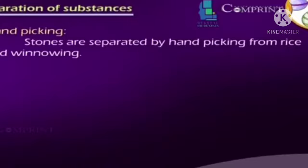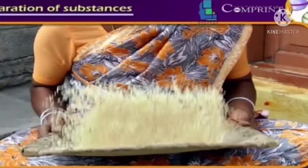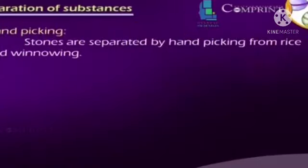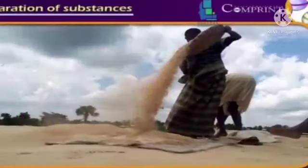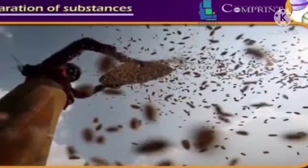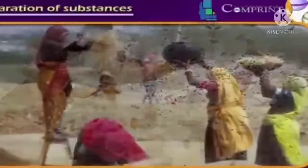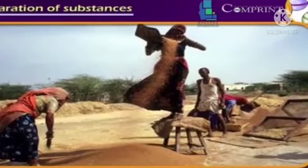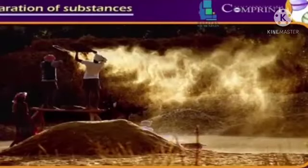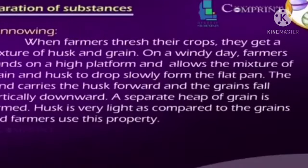Handpicking: Stones are separated by handpicking from the rice. Winnowing: When farmers thresh their crops, they get a mixture of husk. When the mixture is allowed to drop from a certain height, the lightweight constituents are blown away by air and the heavy weight constituents settle on the ground. This process of separating a mixture is called winnowing.